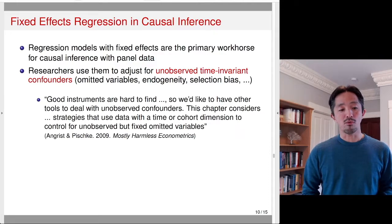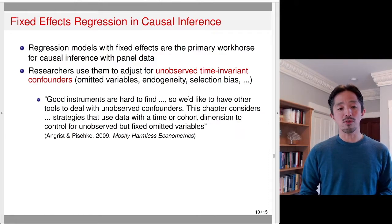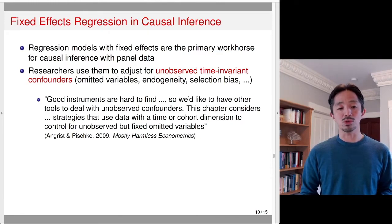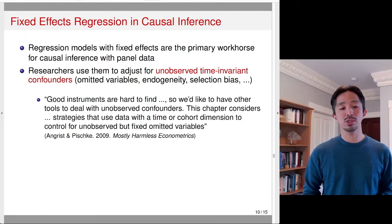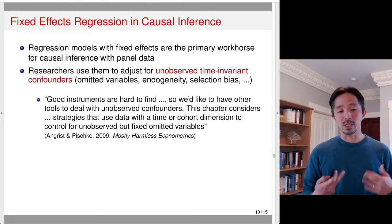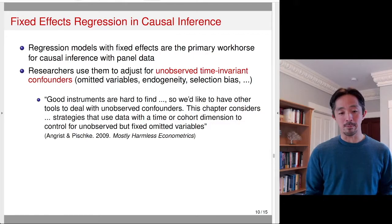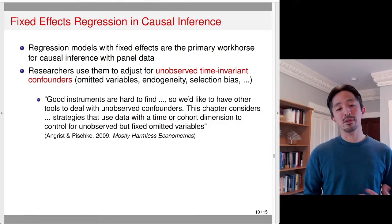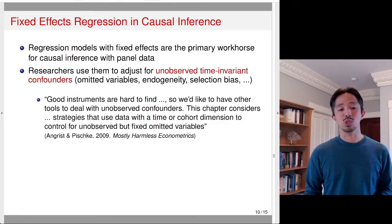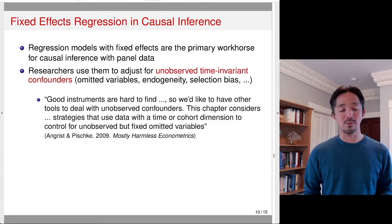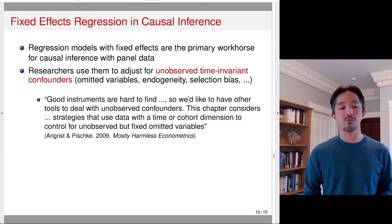Here is a quote from Angrist and Pischke: good instruments are hard to find, so we like to have other tools to deal with unobserved confounders. Basically, using fixed effects is a way to deal with that type of problem with unobserved confounders.